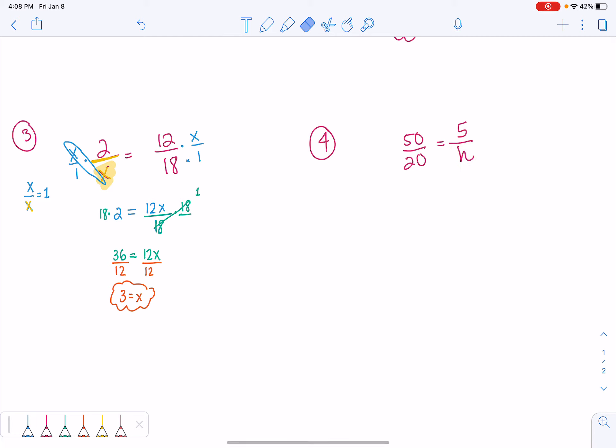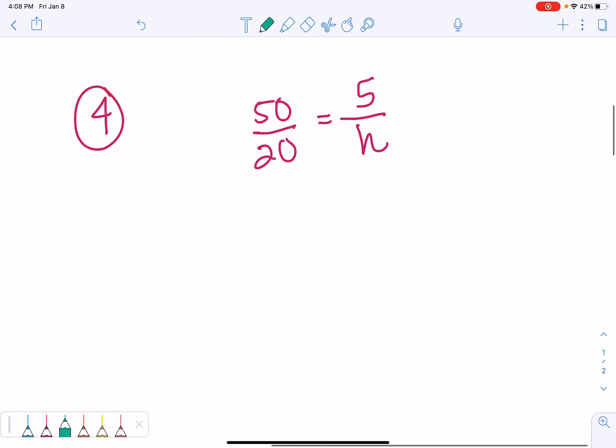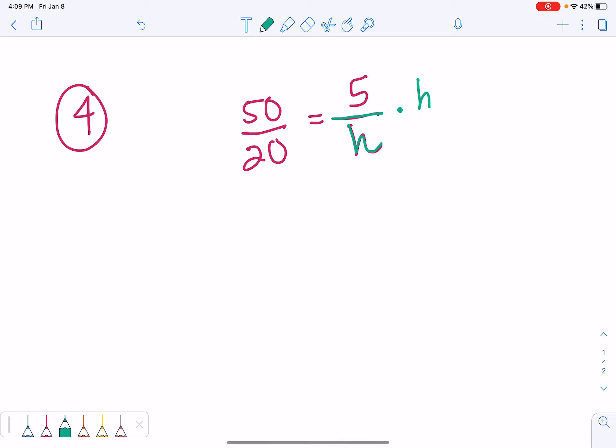So, in number 4, we are dividing by h. We don't like that. So, we want to undo dividing. The opposite of division is multiply by h. On the left, we have 50 times h divided by 20. On the right, we see that, remember, h divided by h equals 1. So, on the right, just 5.